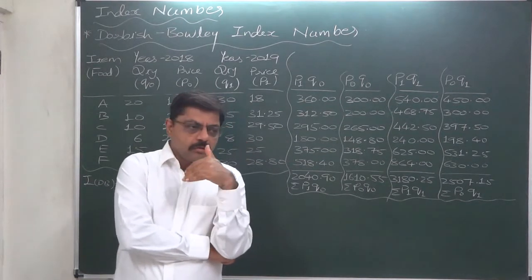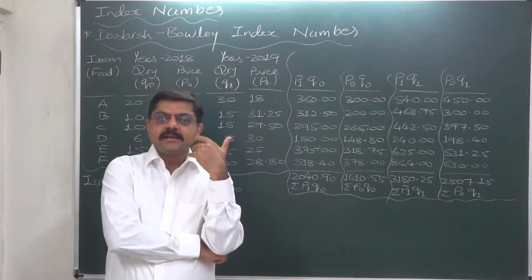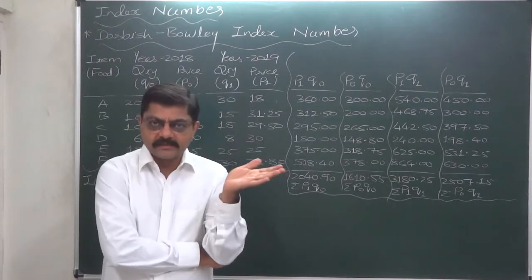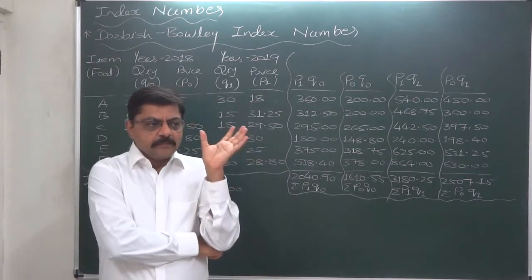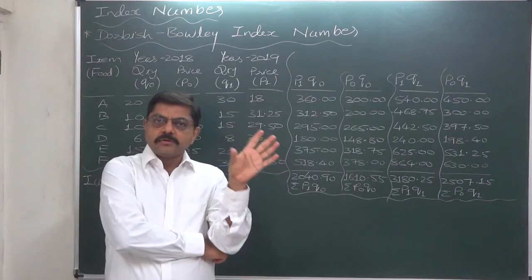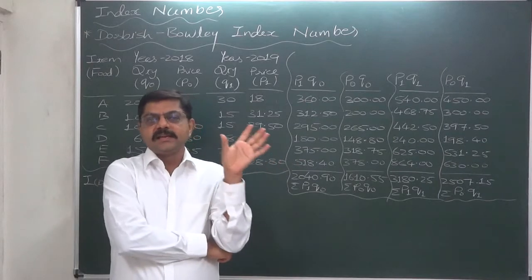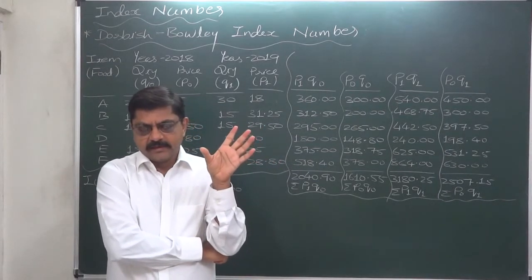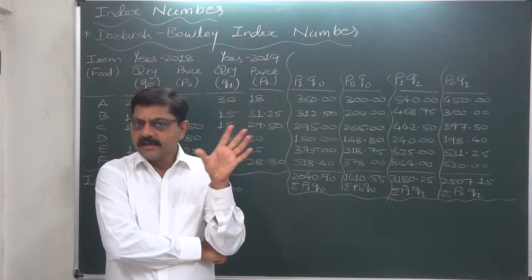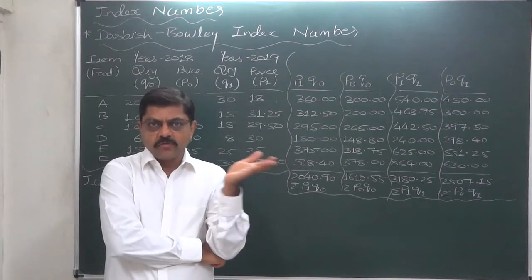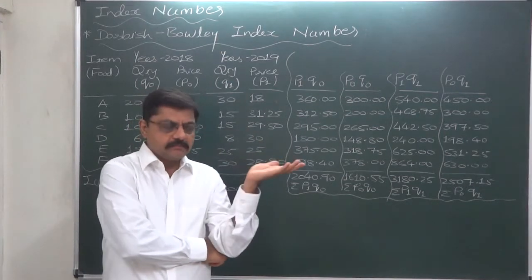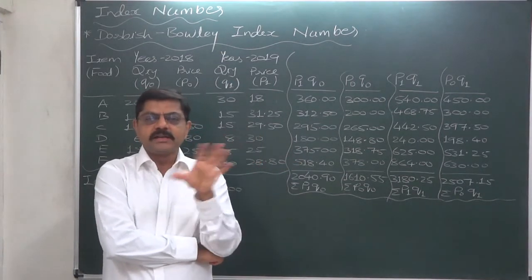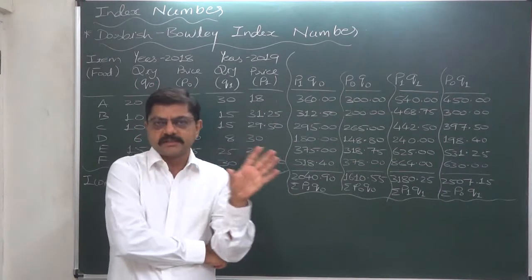So all other weighted index numbers suggested by these two index numbers mainly focused on using the data for both the years. In case of Fisher, the whole data for both the years is used.